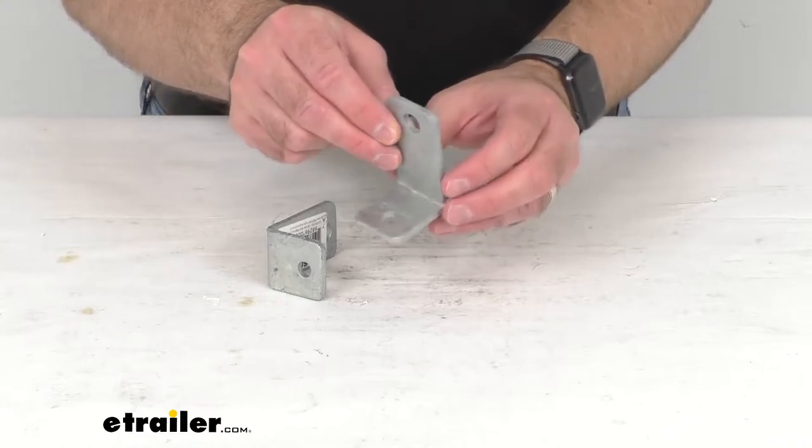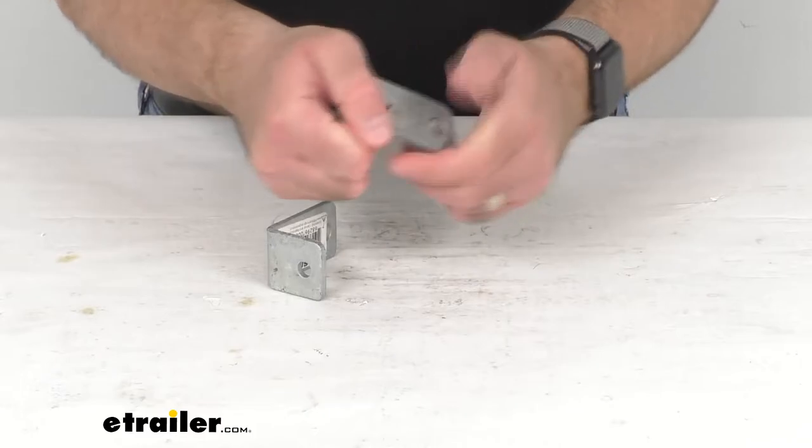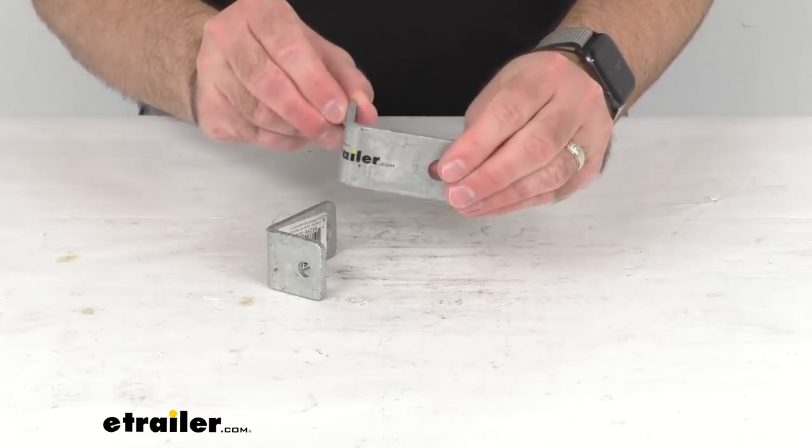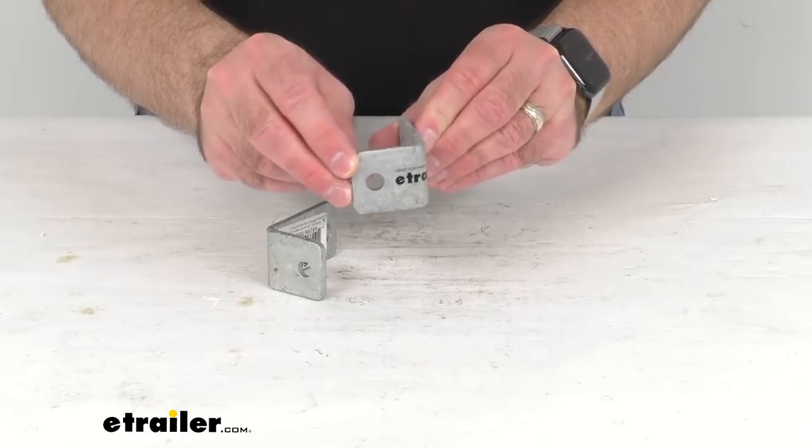These mount to your boat trailer's frame or tongue and are made in the USA of sturdy 7 gauge galvanized steel construction that resists rust and corrosion.